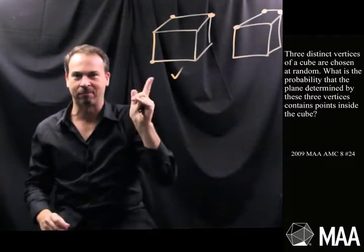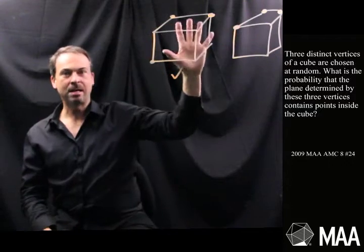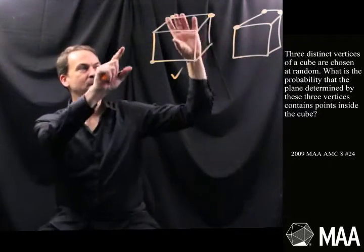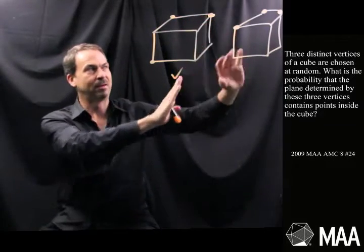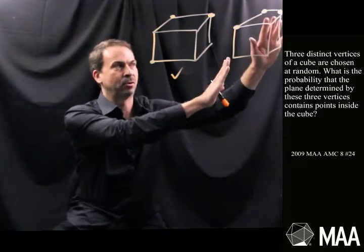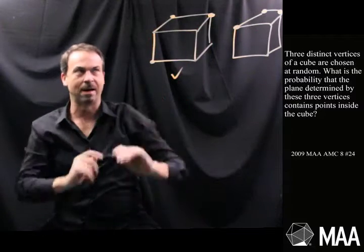All right, so now I've got the question. Choose three vertices at random. What are the chances that I'm in an arrangement where the three vertices aren't on the same face? Because if they're on the same face, I get a plane that doesn't go through the center of the cube.